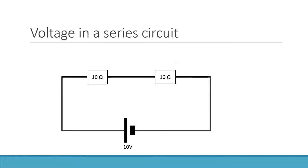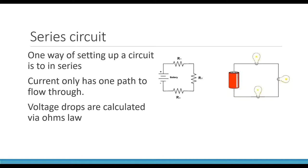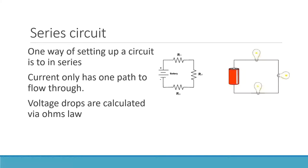A series circuit only has one path for the electrons to go through. Because there's only one path, everything in that circuit runs all the way through. When it gets to the end of that circuit it can only go through one component after the other after the next — that's why it's called a series circuit.